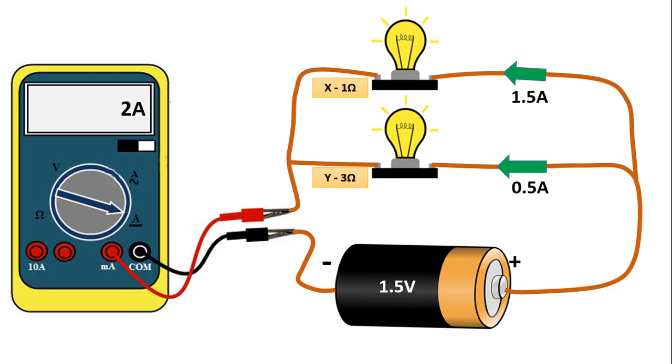But if the lamps are of different resistance, the current is unevenly divided. For example, if lamp X has a resistance of 1 ohm and lamp Y has a resistance of 3 ohms, we read the value of 2 amps in the mains. We get 1.5 amps on the arm of lamp X and 0.5 amps on the arm of lamp Y.